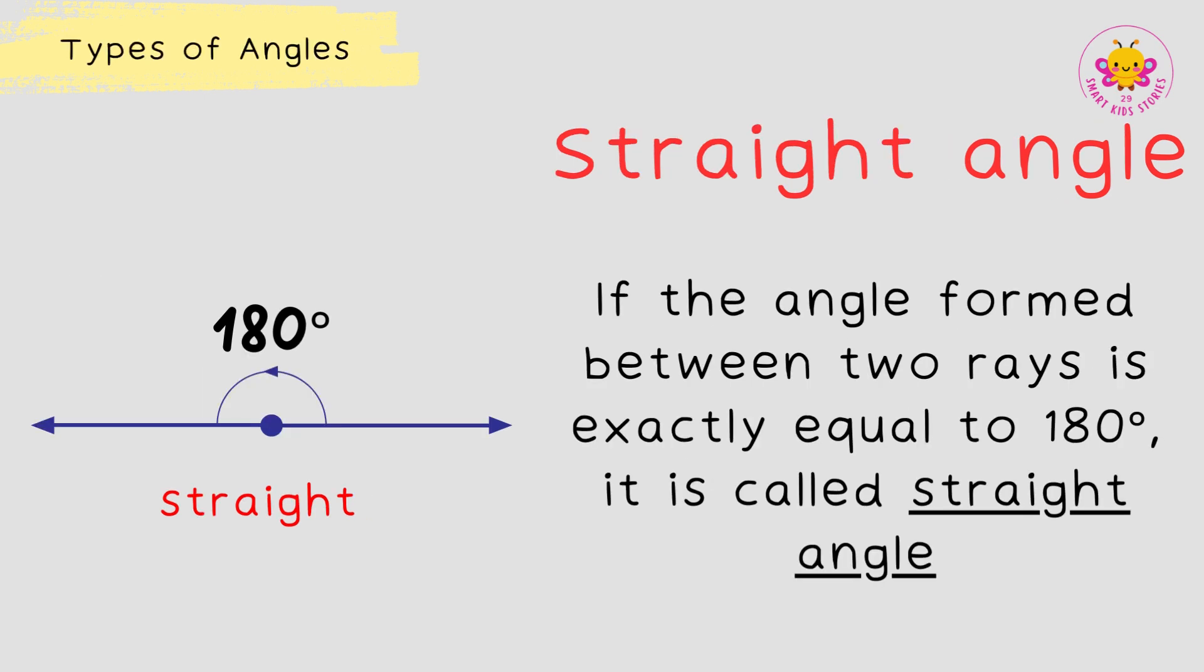Straight angle. If the angle formed between two rays is exactly equal to 180 degrees, it is called a straight angle.